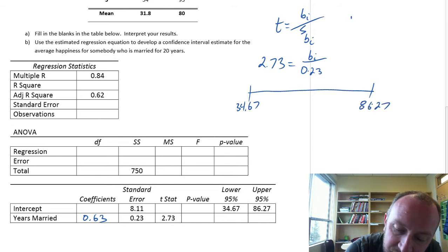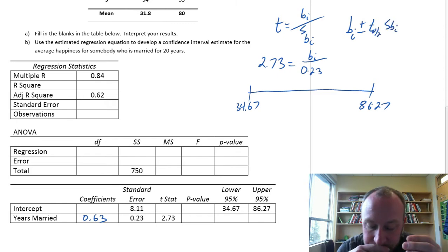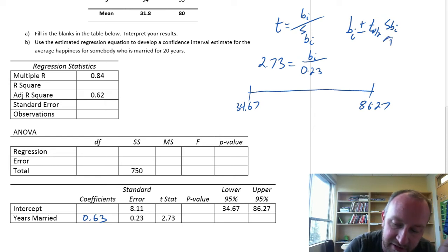That confidence interval gives us 34.67 and 86.27. We know that those were calculated by that coefficient, which is what we want to solve for, plus or minus a critical value times a standard error.